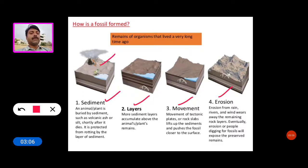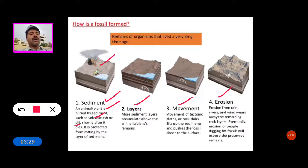The first type is sedimentation. An animal or plant is buried by sediment, such as volcanic ash or silt, shortly after it dies. It is protected from rotting by the layer of sediment.